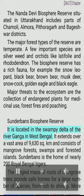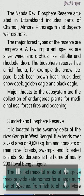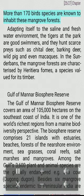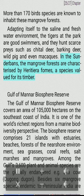Sundarbans Biosphere Reserve: It is located in the swampy delta of the River Ganga in West Bengal. It extends over a vast area of 9,630 square km and consists of mangrove forests, swamps and forested islands. Sundarbans is the home of nearly 200 Royal Bengal tigers. The tangled mass of roots of mangrove trees provides safe homes for a large number of species, from fish to shrimp. More than 170 bird species are known to inhabit these mangrove forests. The tigers at the park are good swimmers, adapted to the saline and fresh water environment, and they hunt prey such as chital deer, barking deer, wild pig and macaques. The mangrove forests are characterized by Heritiera fomes, a species valued for its timber.